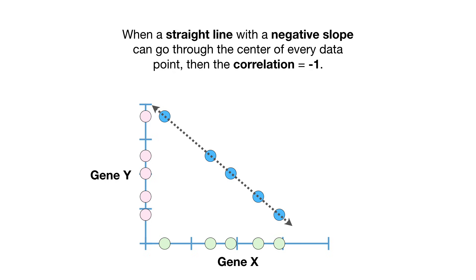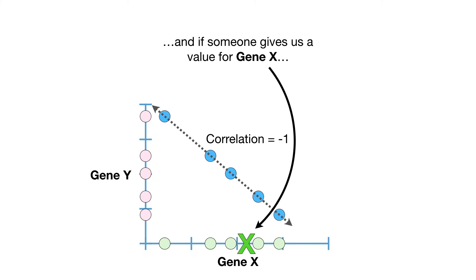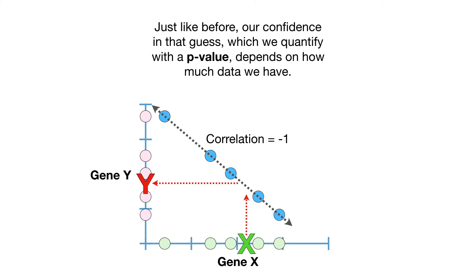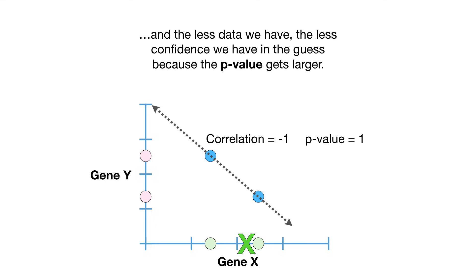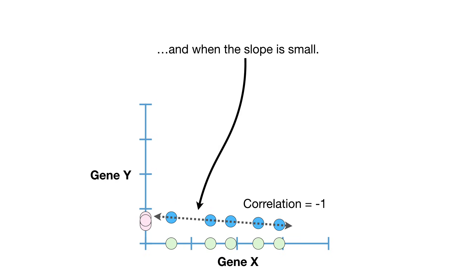When a straight line with a negative slope can go through the center of every data point, then correlation equals negative 1. Since a straight line can go through all of the data points, correlation equals negative 1 implies there is a strong relationship in the data. If someone gives us a value for gene X, we can guess a value for gene Y within a very narrow range. Just like before, our confidence in that guess — quantified with a p-value — depends on how much data we have. As long as a straight line goes through all of the data and the slope is negative, correlation equals negative 1 regardless of whether the slope is large or small.